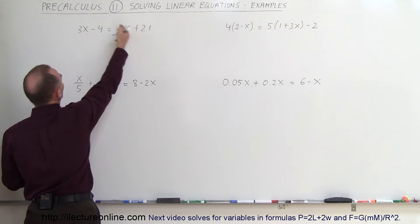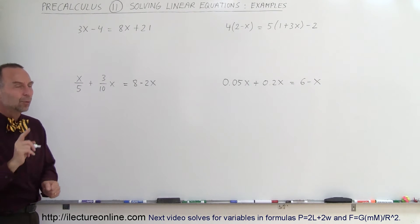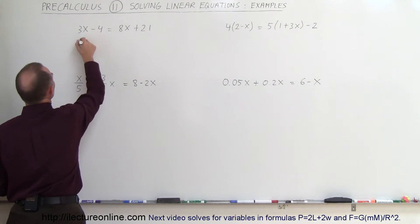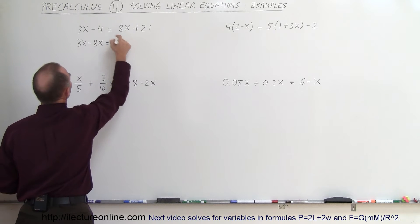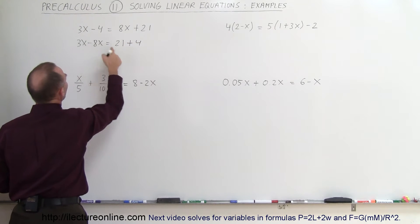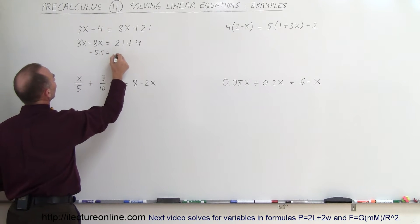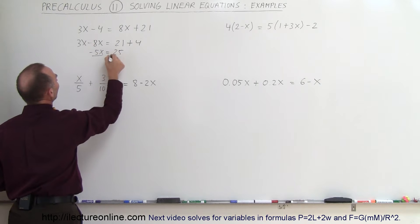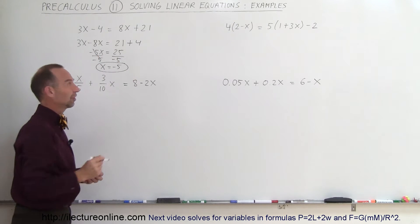So in this case the 8x goes to the left, the minus 4 goes to the right. Remember when we cross the equal sign we change the sign of the term. So this becomes 3x minus 8x equals 21, and the 4 goes across and becomes a plus 4. We combine like terms, so this becomes minus 5x is equal to 25. Now we divide both sides by the numerical coefficient in front of the x — that cancels out — so x is equal to minus 5, and that's the solution to our first example.